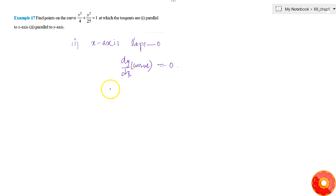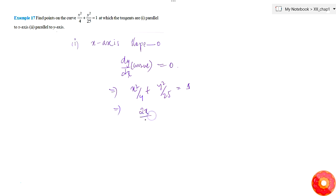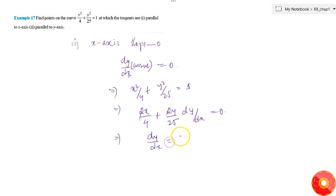So dy/dx equals zero. The given equation is x²/4 + y²/25 = 1. Differentiating, we get 2x/4 + (2y/25)·(dy/dx) = 0. The 2s cancel, so dy/dx = −(25x)/(4y). This is the slope of the tangent, and setting it equal to zero means x must be zero.